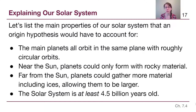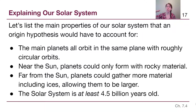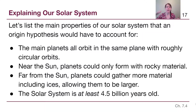Let's start with the main things we know about our own solar system that any model we build has to account for. First, the main eight planets all orbit in the same flat plane and all have roughly circular orbits. That tells us the material they formed out of had already collapsed into a flat plane moving with fairly circular orbits.